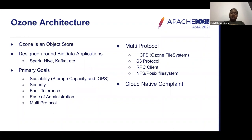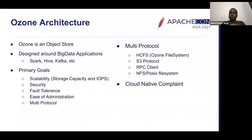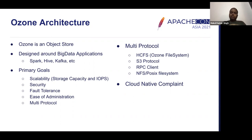Let's start with the architecture. For those of you who do not know, Ozone is an object store. Most of the people who worked on Ozone were earlier working on HDFS, so we learned about the problems we had with HDFS and tried to solve them with Ozone. Ozone has been developed from the ground up to work with big data applications, working with applications like Spark, Hive, and Kafka from day one.